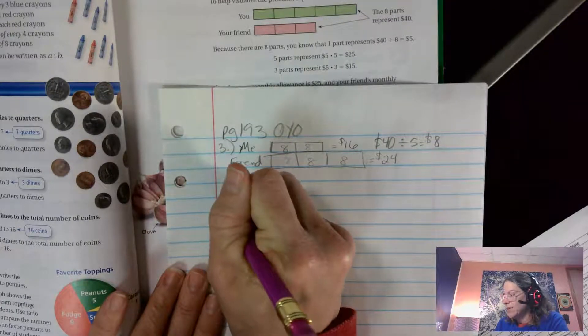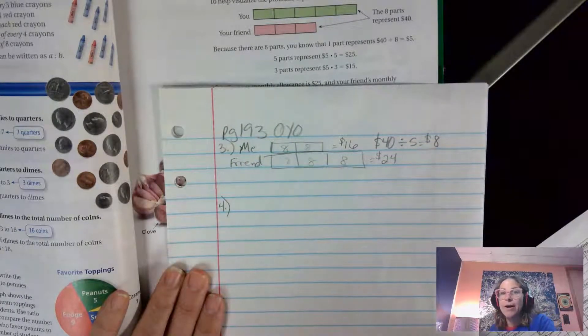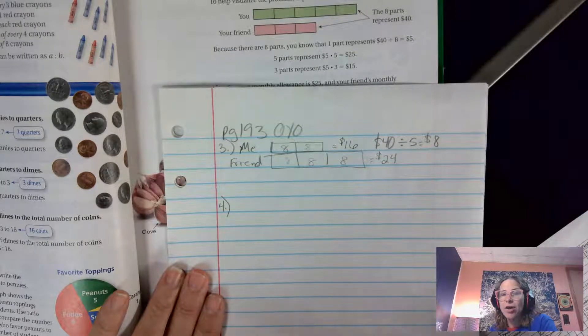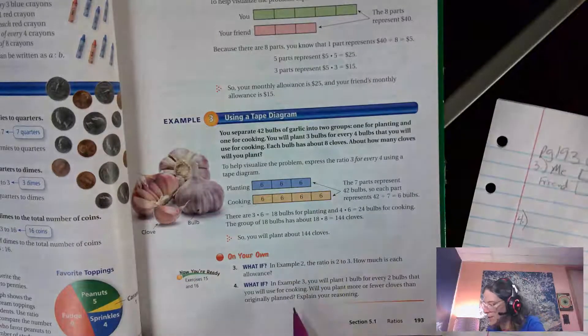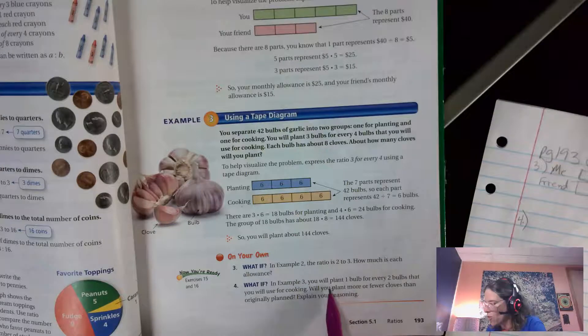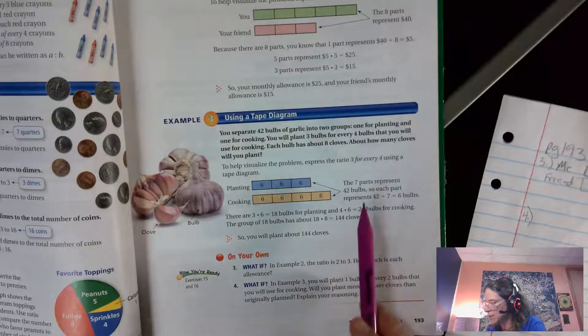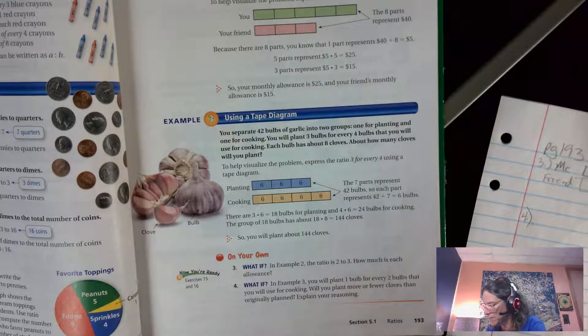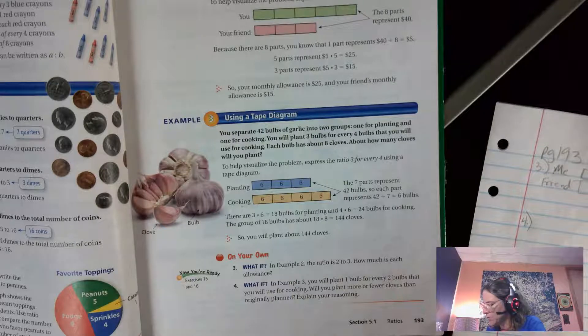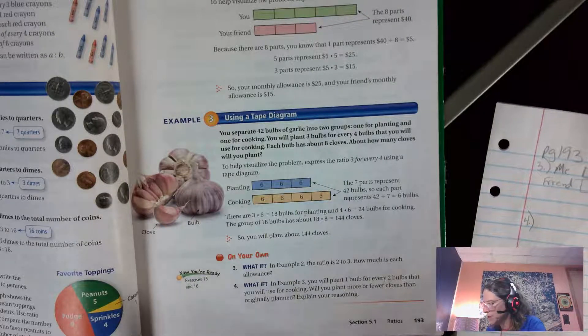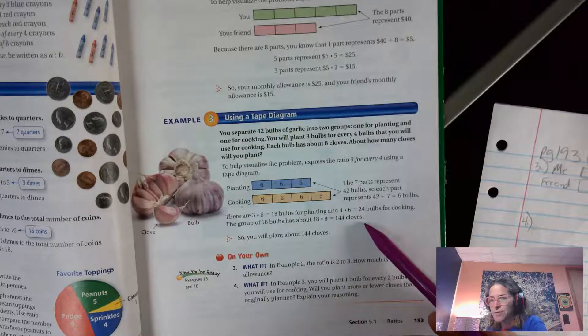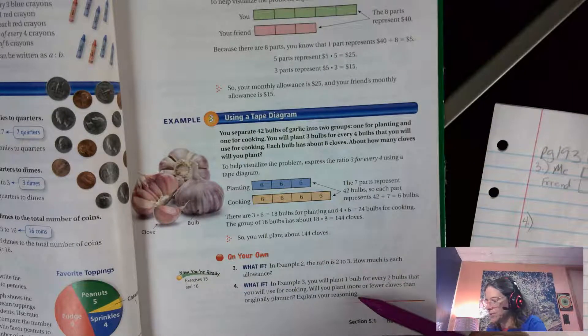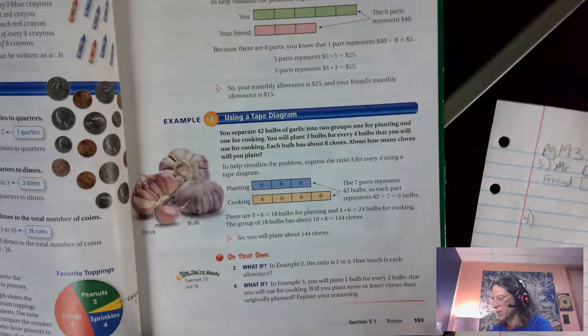On your own number four is also tricky but fun. Oh, I love it when these math problems make sense. So in example three it has a one to two bulb ratio instead of three to four. It asks will you plant more or fewer cloves than originally planned? Up here we had originally planned for 144 cloves. I want to know if I change it to one to two will I be planting more or fewer.